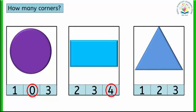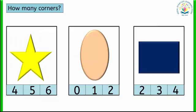Look at the triangle. How many corners does a triangle have? Triangle has three corners. Very good, students! Star. Star has five corners. Oval. Oval has zero corners — no corners.